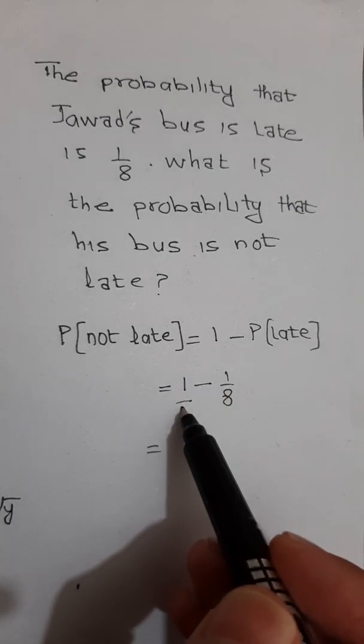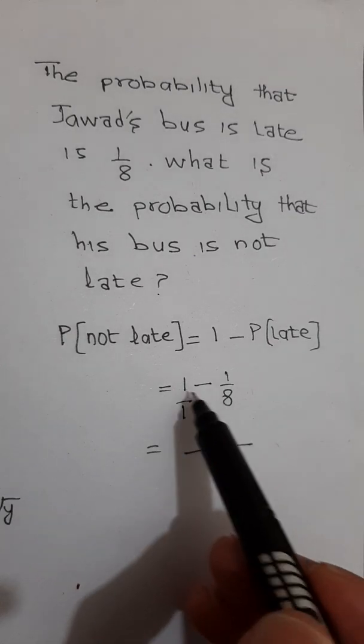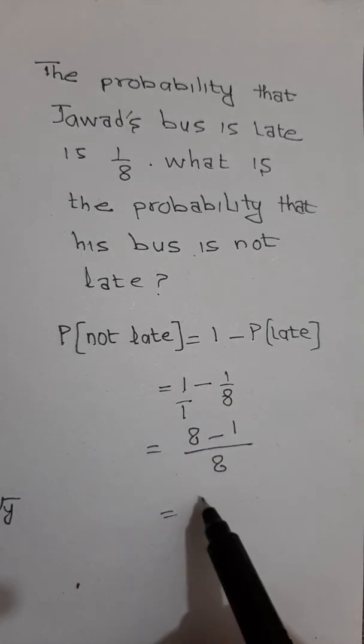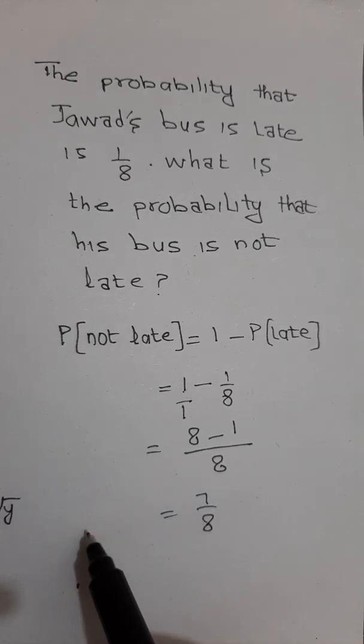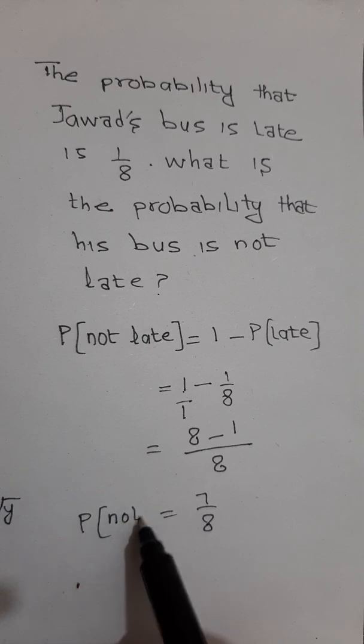Taking the LCM, you have 1 in the denominator here, so 8 is the LCM. 8×1 is 8 minus 1×1 is 1, that is 7/8. This is the answer for probability of the bus not being late.